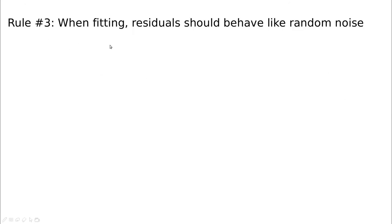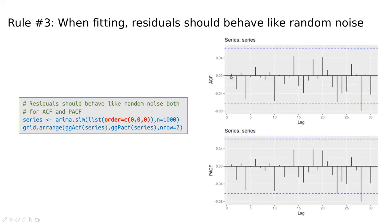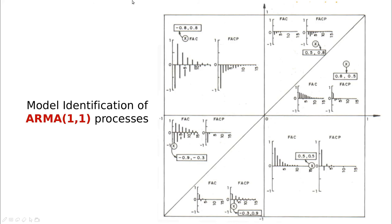Rule number three is a kind of consistency check. Everything that is inside, the residual, should be like random noise. Remember that random noise is something like that, so you have everything inside those lines, even for the PACF, the partial autocorrelation function. This is going to be a test of how good our model is trying to model the time series. You need to practice a little bit with this in order to be familiar with these ideas.